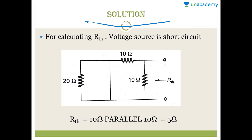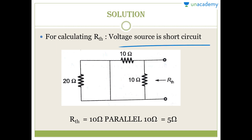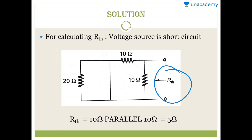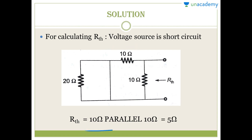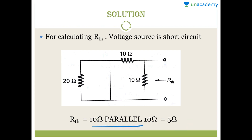For calculating RTH, the voltage source is short circuited. Now you can see that the 10 ohm and 10 ohm resistances are in parallel, so RTH equals 5 ohm.